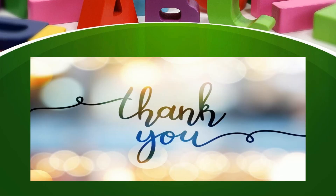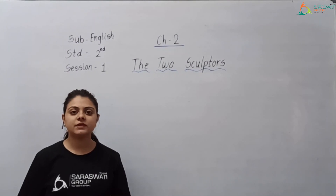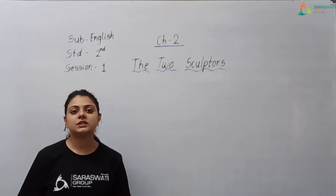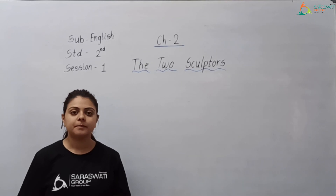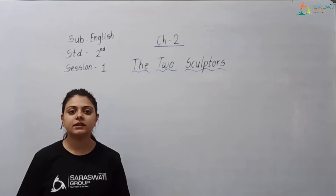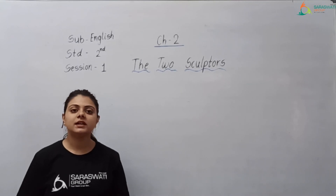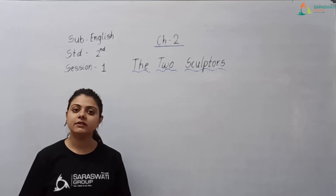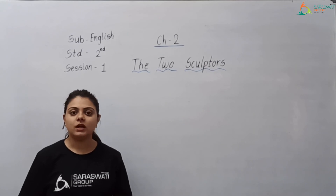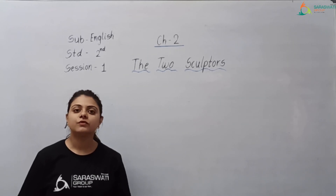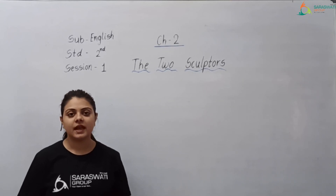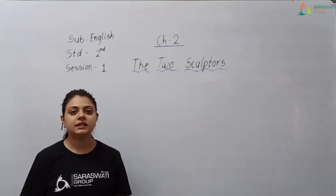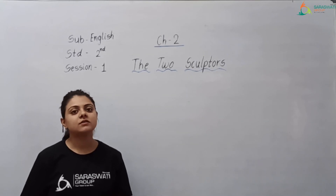Thank you. I hope you all have understood the meanings of all the words. At the end of this video lecture, you are going to get a worksheet. In Question A, two columns are given — column A has all the new words and column B has their meanings in jumbled form. You have to match the correct meanings. In Question B, missing letters are given and you have to complete the words using the help box.